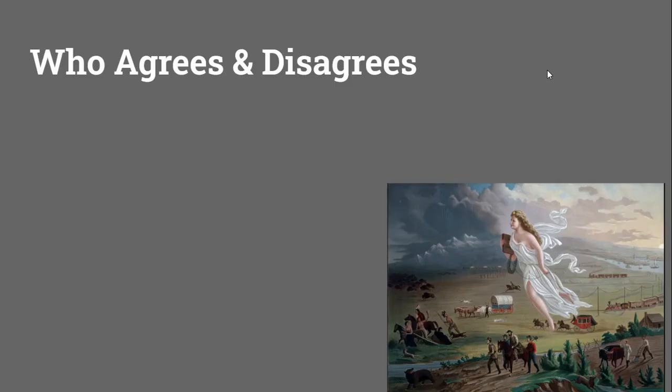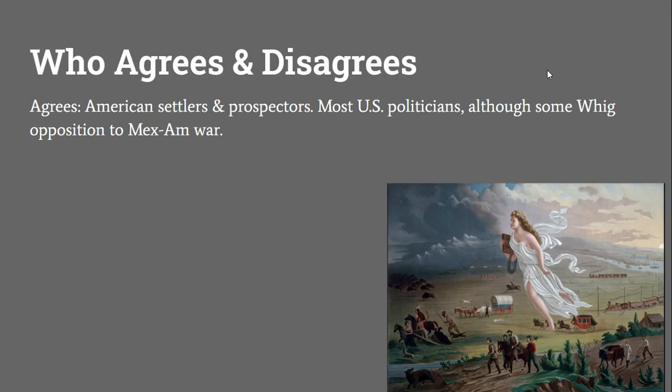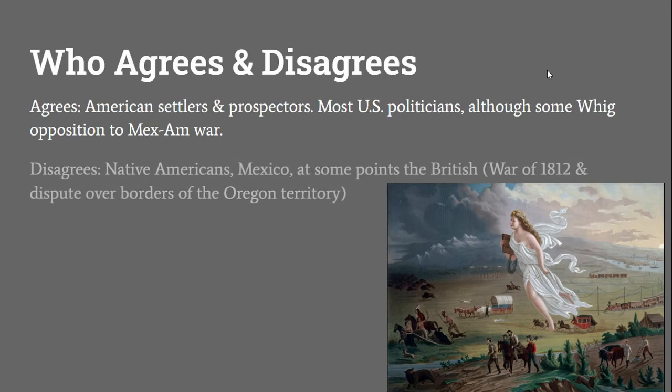So who would agree and disagree with this painting in the time period? It definitely represents the view of most Americans, especially settlers, prospectors, and most 19th century U.S. politicians, although there was some opposition to conquering the region in pursuit of Manifest Destiny, notably from some Whigs during the Mexican-American War. Those that would disagree include Native Americans, Mexico, and at some points the British. They would probably see the United States as a barbaric aggressor, hell-bent on destroying their civilization.